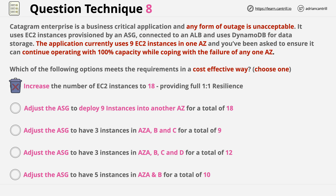Answer 2 is an interesting one — it's a wrong answer, but not in the way you might think. It's only wrong because it's not the cheapest way of delivering the desired outcome. With this solution you will have 18 instances, 9 in each of 2 availability zones. If one availability zone fails, you would still have 9 instances, meaning it meets the objective of the question, but it's not the most cost-effective answer, as we'll see with the remaining answers.